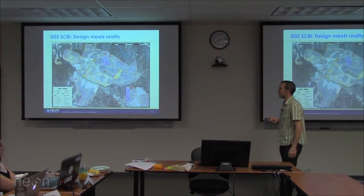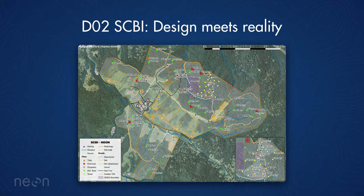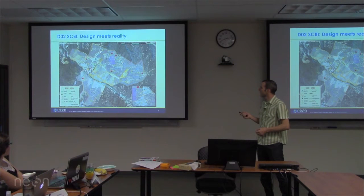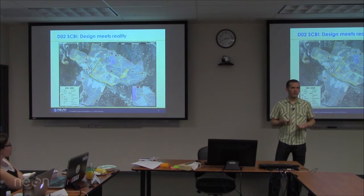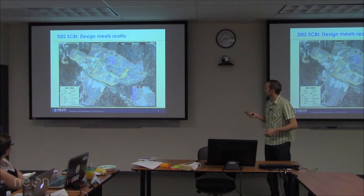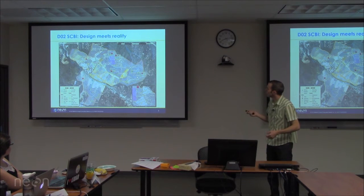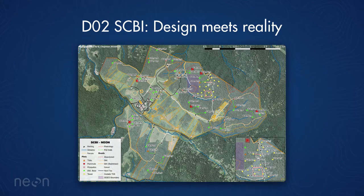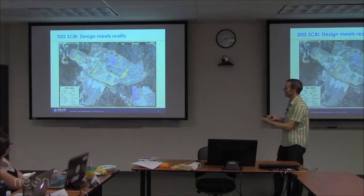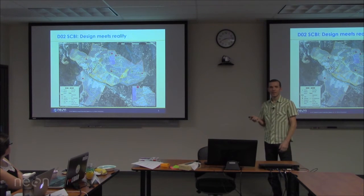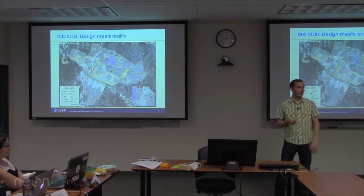Here is the site on the ground — no longer a schematic. This is in Virginia at the Smithsonian Conservation Biological Institute, a site with a long history of research. We have to place these plots around existing research, as we're essentially the same as any other researcher at these sites. The distributed base plots show up as bright green dots across the landscape, generating LAI, canopy chemistry, and biomass data.